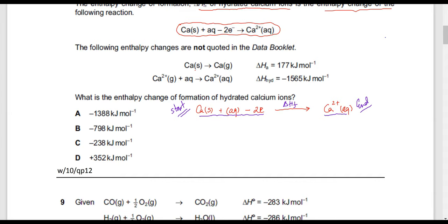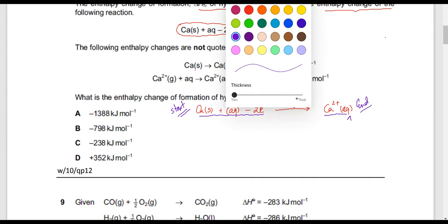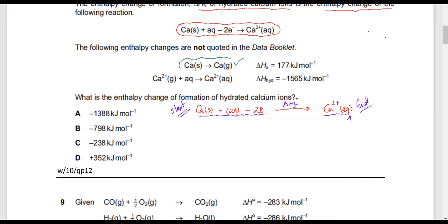This is one path, and I need to create another path. If I'm able to create this other path, the enthalpy changes would be the same, and I would be able to figure this out. There are a couple of equations given. One equation provided is calcium solid changing into calcium gas. There is calcium solid here, so why don't we change that into calcium gas?